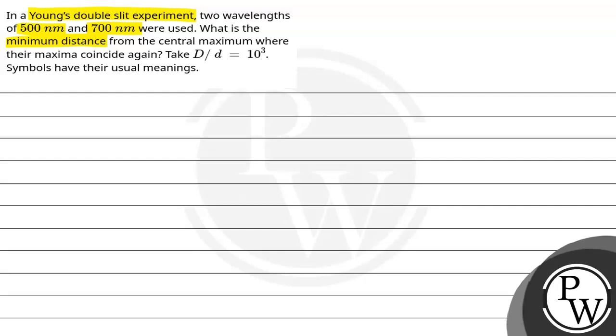What is the minimum distance from the central maximum where the maxima coincide again? Take D by d equals 10 to the power 3. Symbols have their usual meanings.